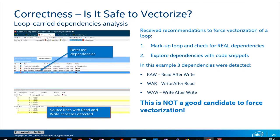By the way, if you do detect dependencies, it's still not the end of the world. It's possible you have a dependency only in distant iterations — for example, if the dependency happens every 10 iterations, you could still vectorize with a vector length of 8 and get the benefits of vectorization safely. But you have to check the code to understand whether this is the case.